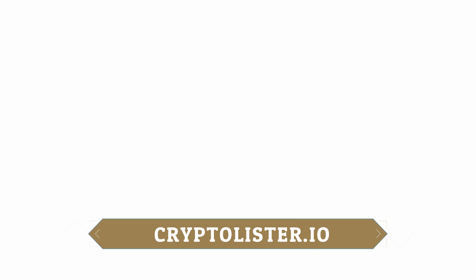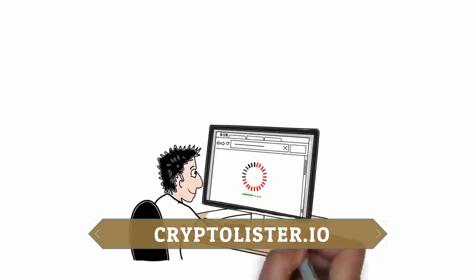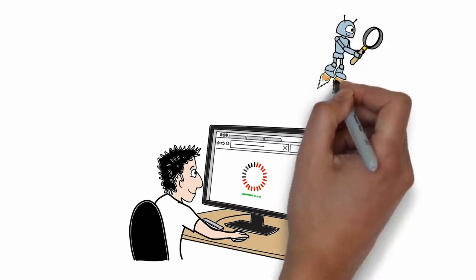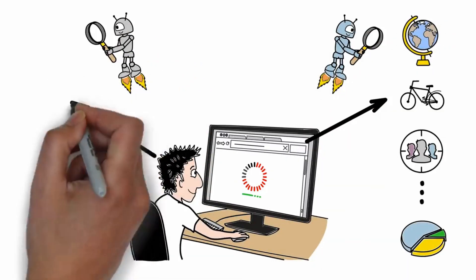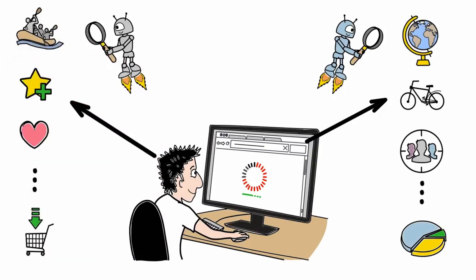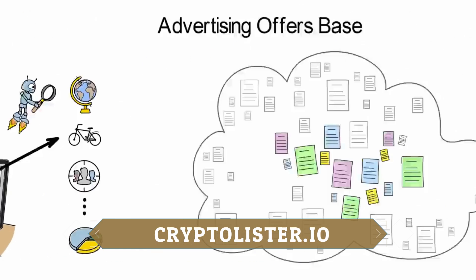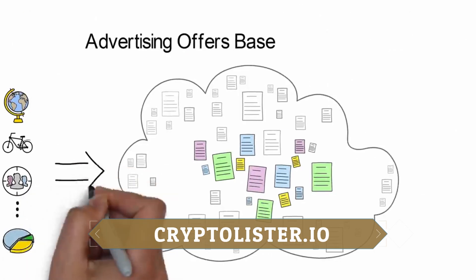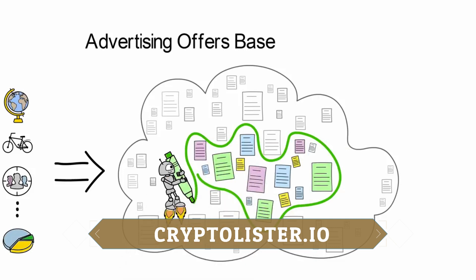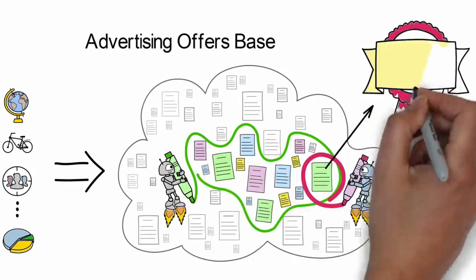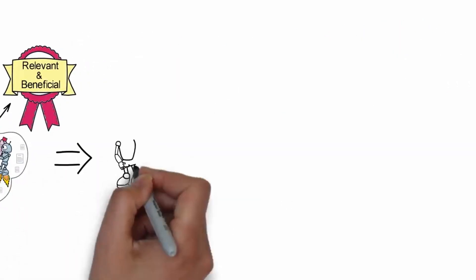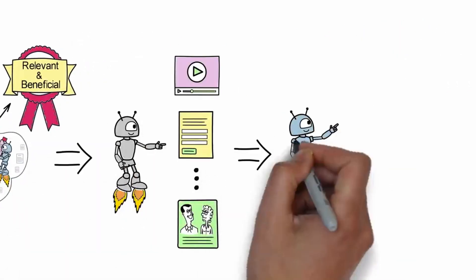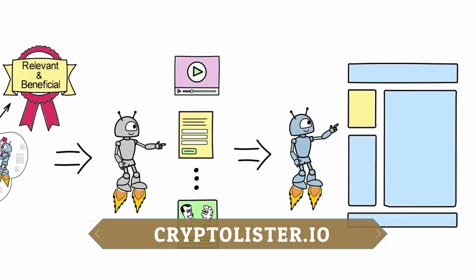Here's how it works. Within a split second of a user accessing a publisher's website, neural networks collect maximum information about both the site and the user, analyzing their current interests and needs. They gather a list of ads that would appeal to the user the most, and ultimately select the one that is the most relevant and financially beneficial. They then determine the best format and the most appropriate placement for the ad on the website, based on the strategy of maximizing results.